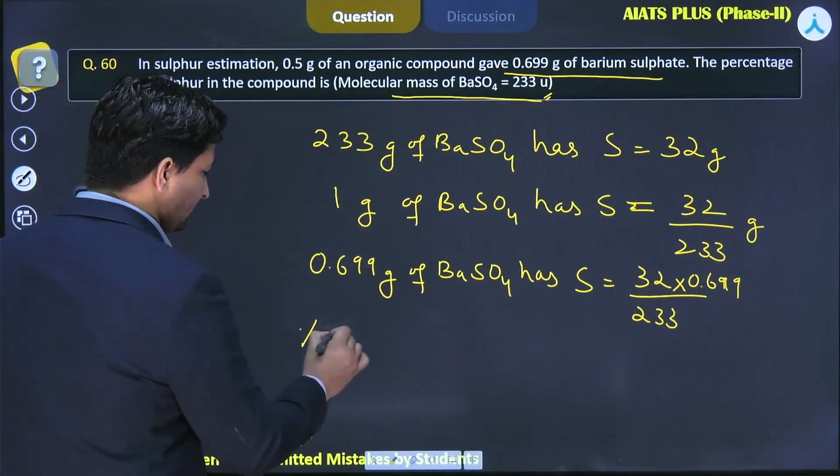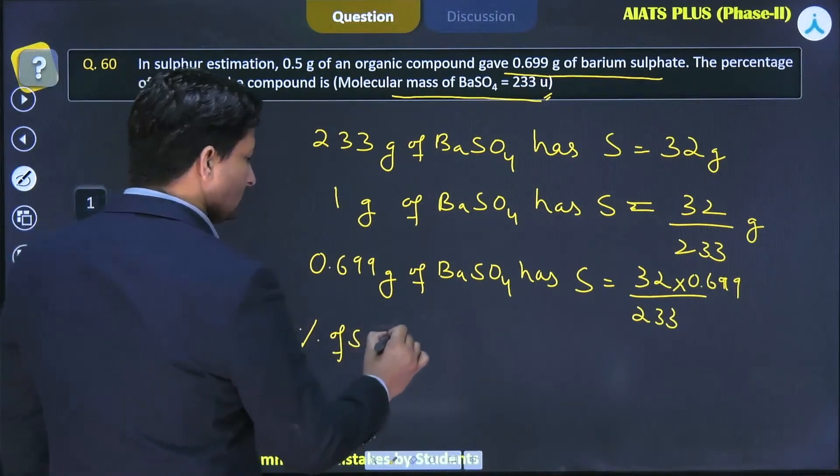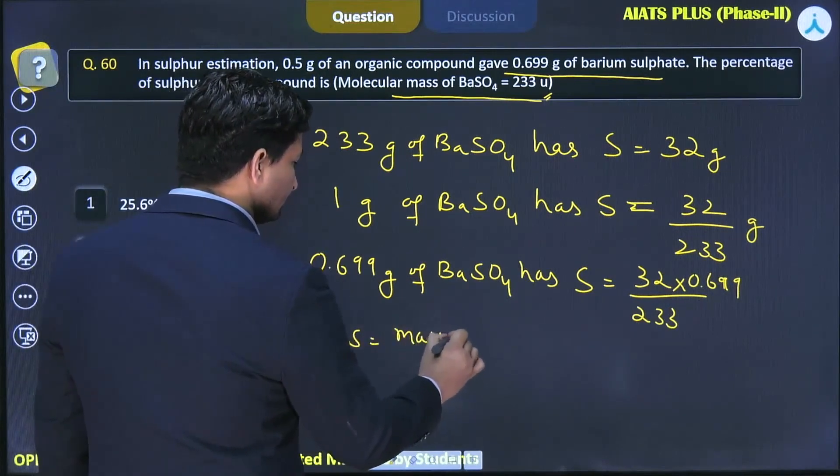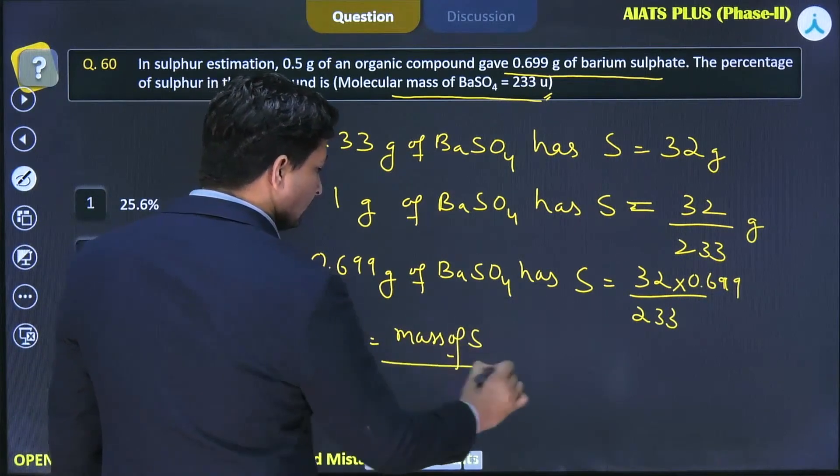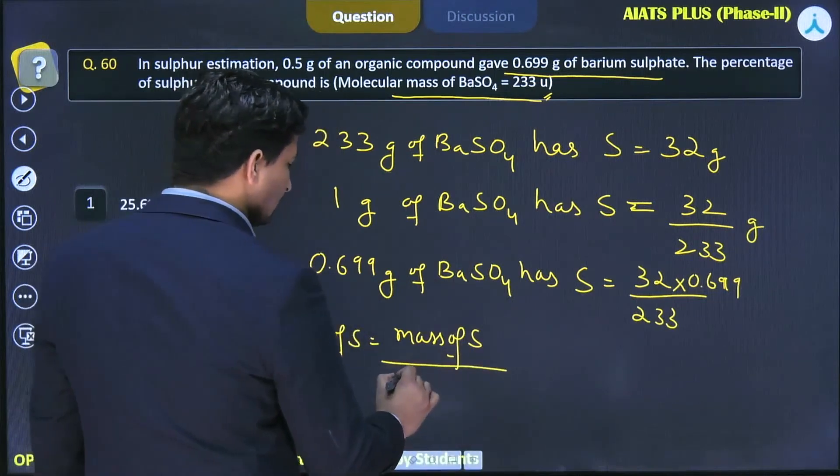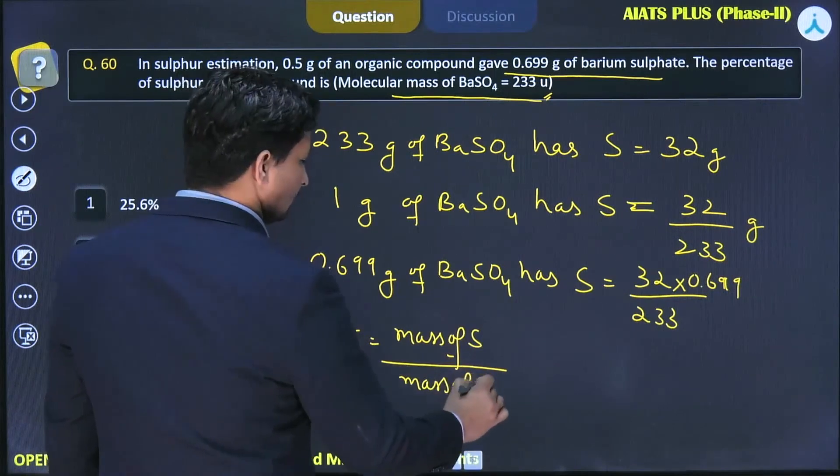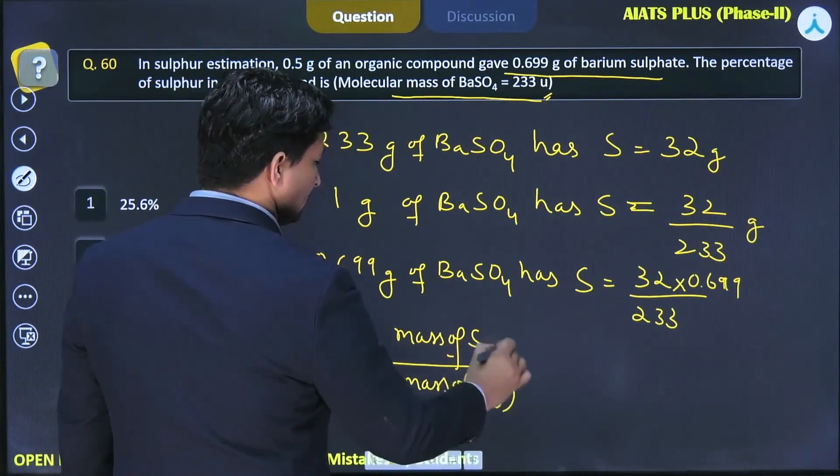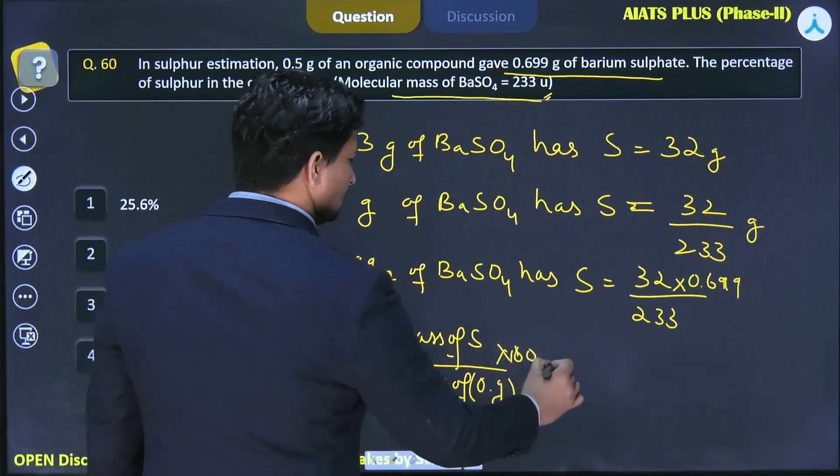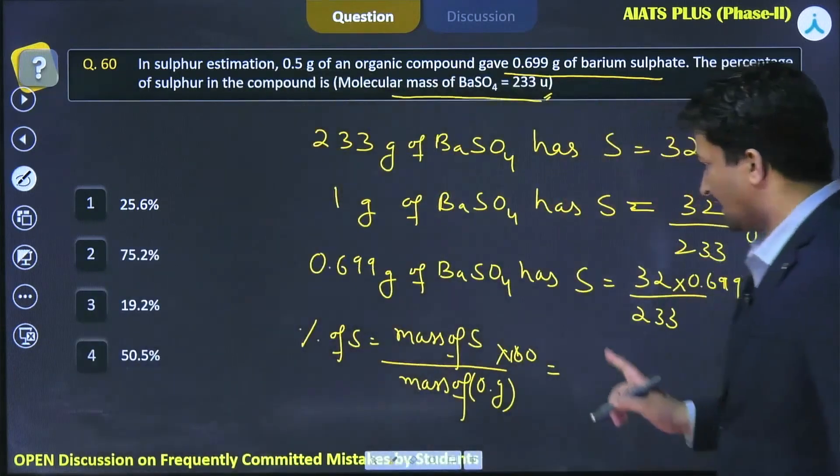The percentage of sulfur equals the mass of sulfur in the organic compound divided by the mass of the organic compound, multiplied by 100. The mass of sulfur is 32 times 0.699 divided by 233.